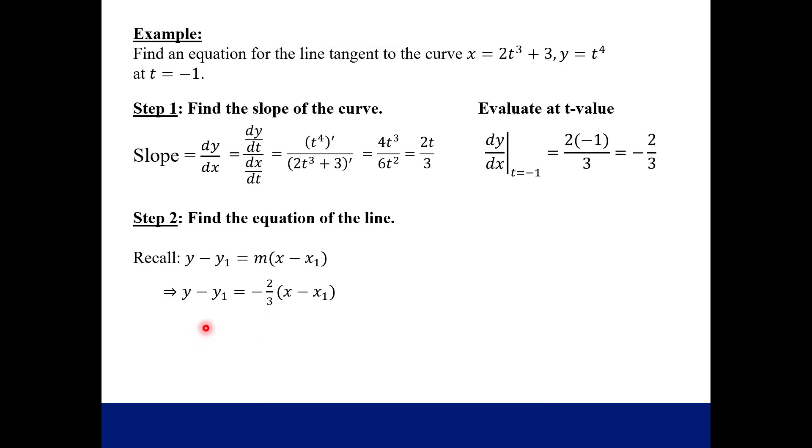Now, notice what we're missing. We are missing x1 and y1. So we need to find those. And in this case, they were not given. So all you do is you go back to your two equations for x and y, and you plug in your t value that was given, and then you're going to get an x comma y.